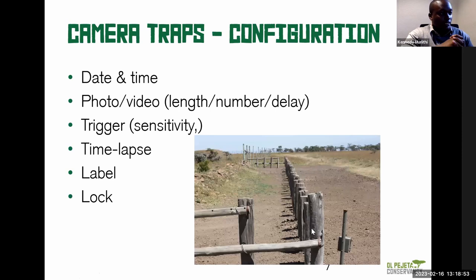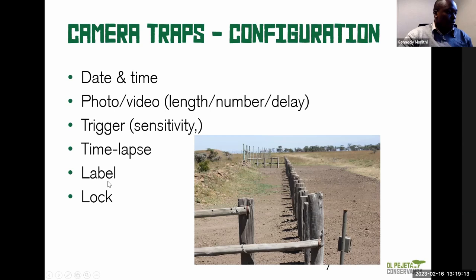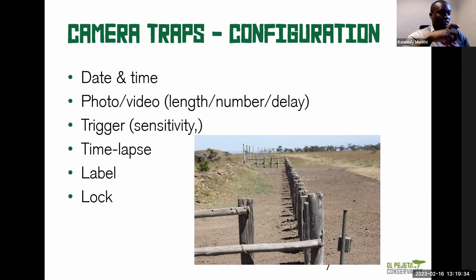What do you need to configure on a camera trap so that your data is accurate and useful? These settings vary based on the camera model, but generally these are common across most camera traps. You're able to set the date and time. You want to do this so that whatever image is captured can be correlated to a particular time. If you don't set the correct time, when you review the images, you won't be able to tell what time a particular incident happened. Having the correct date and time is very important.